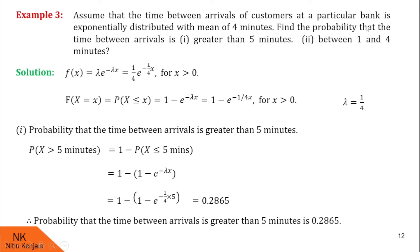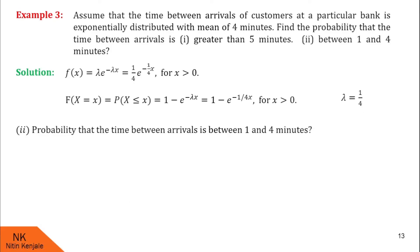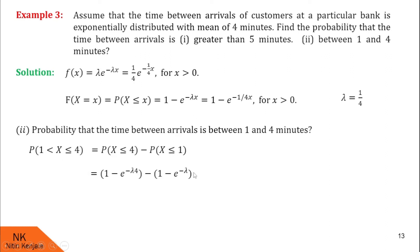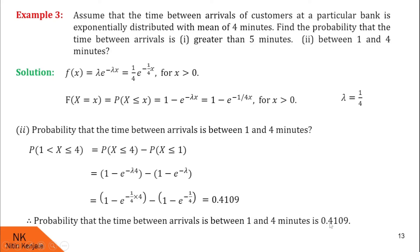Now we calculate the probability that the time between arrivals is between 1 and 4 minutes: P(1 ≤ X ≤ 4) = P(X ≤ 4) − P(X ≤ 1). Using the CDF formula with lambda = 1/4, after substituting and simplifying, P(1 ≤ X ≤ 4) = 0.4109. Therefore the probability that the time between arrivals is between 1 and 4 minutes is 0.4109.